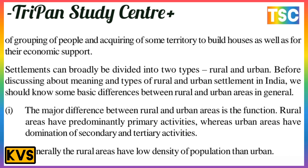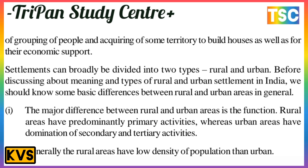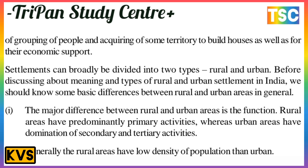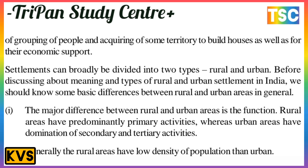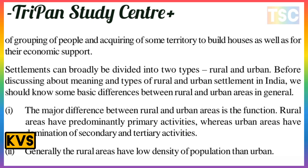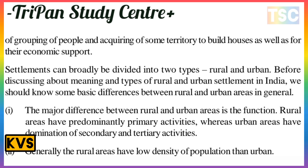Settlement is broadly of two types: urban and rural. Before discussing the types of rural and urban settlement in India, we should know some basic differences between rural and urban areas. The major difference is in their function and structure. Rural areas have predominantly primary activities, whereas urban areas are dominated by secondary and tertiary activities.